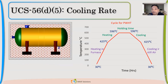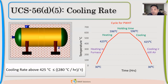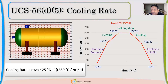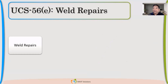The same considerations apply to the cooling rate. The vessel must first be slowly cooled inside the furnace, and only after reaching 425°C can it be cooled in still air. The cooling rate permitted is slightly higher than the heating rate — where heating was 222°C per hour, cooling is allowed at 280 degrees Celsius per hour.